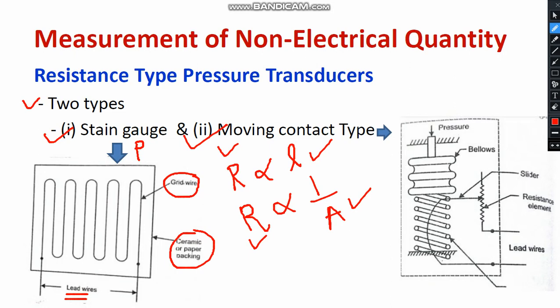The second method is the moving contact type pressure transducer. You can see pressure being applied externally, and there is a bellows — an elastic type material — with a lead wire. We keep a resistive element and there is a slider. Whenever you apply pressure, the bellows are compressed. The bellows are directly connected to the lead wire. So whenever the bellows compress, the position of the slider changes — the slider may go down. Whenever the slider moves down, the resistive element value changes. So pressure is the input and resistance is the output — pressure is proportional to the value of resistance.